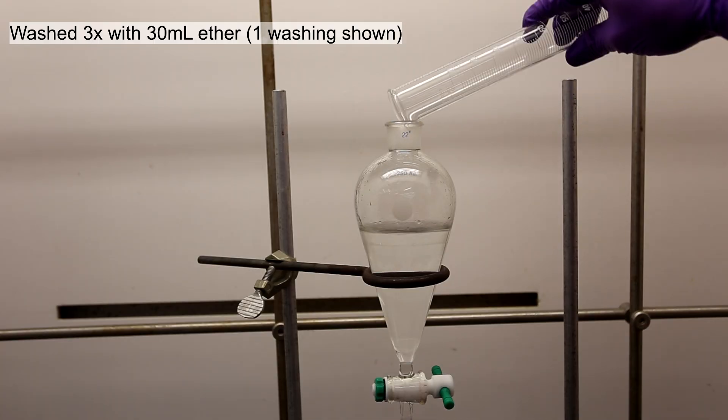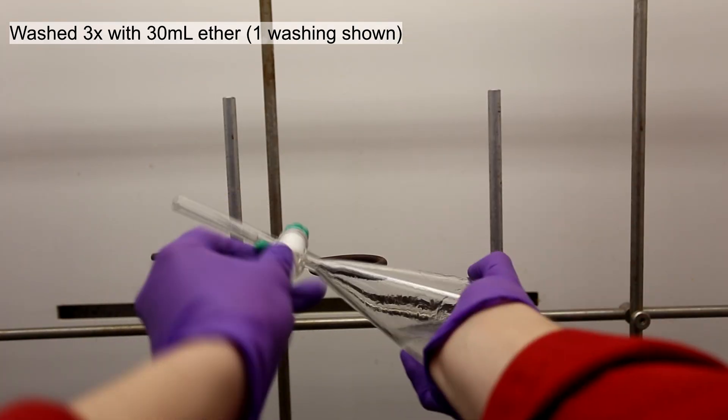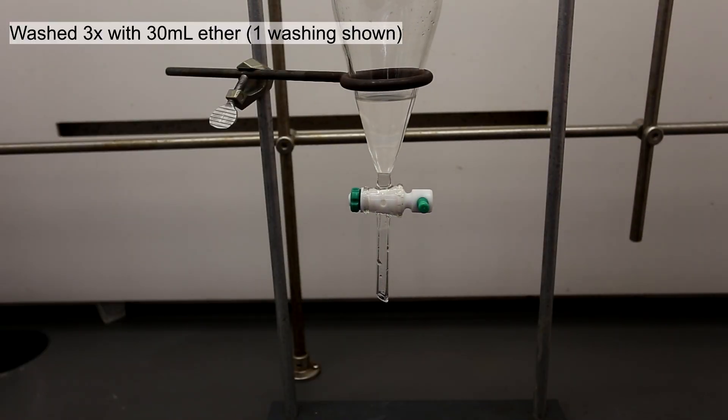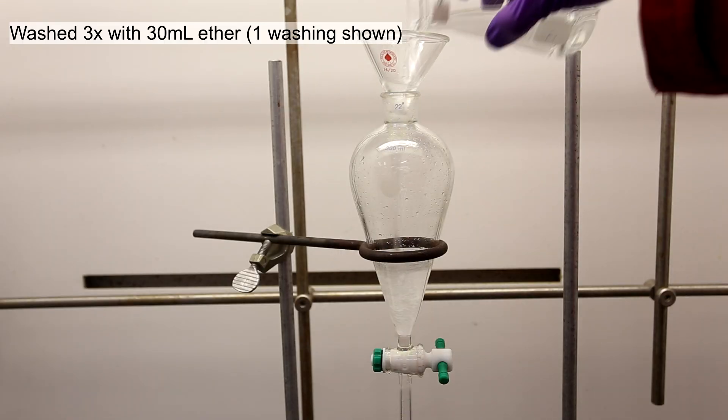The butyric acid was then extracted using 30 milliliters of ether 3 times. Remember that it's always better to do multiple washings with a smaller volume than one washing with a large volume.